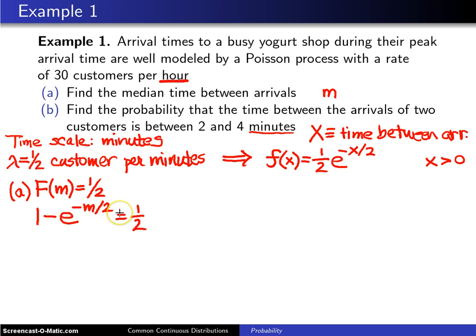When you do all of that, the median will be negative two times the natural log of one half. Negative two times the natural log of one half turns out to be approximately 1.3863 minutes.